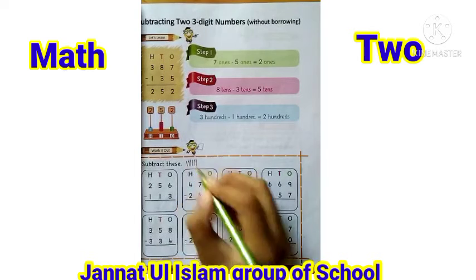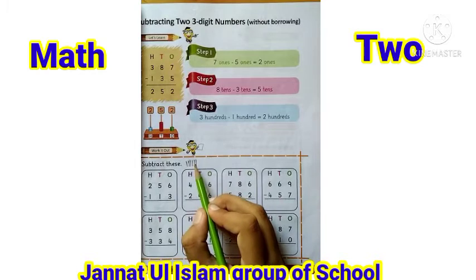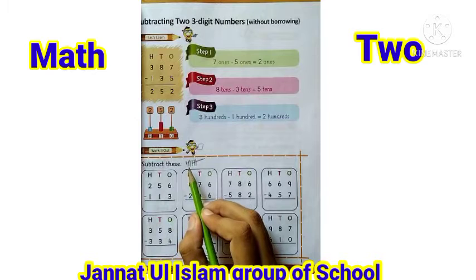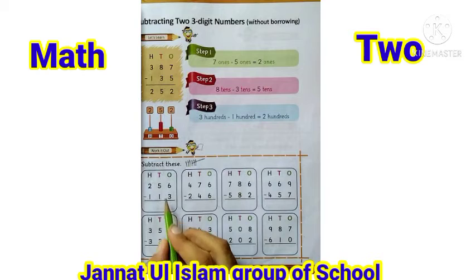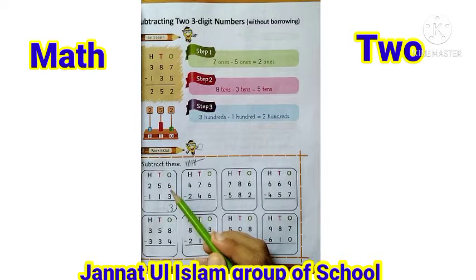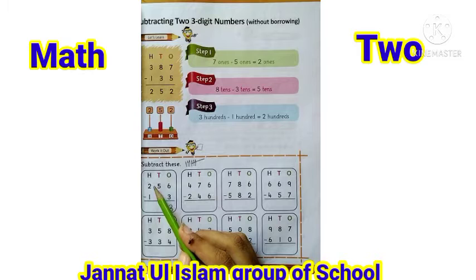One, two, three, four, five, six. And this digit is three, so we can cut three lines: one, two, three. We count remaining lines: one, two, three. Remaining lines ہمارے پاس three ہیں، تو ہم ادھر three write کریں گے۔ ہم نے ones میں سے ones کو minus کیا — اوپر six تھا، نیچے three تھا، six lines draw کی اور three کاٹ دیں، باقی three بچیں، تو ones کے نیچے three لکھا۔